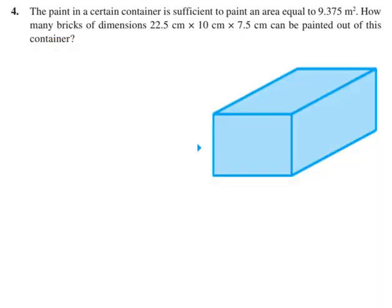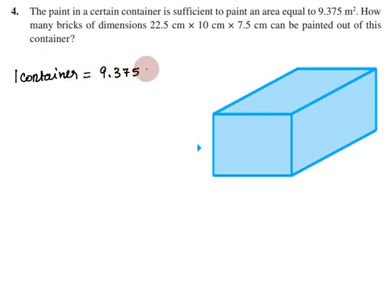Exercise 13.1, problem number 4. The paint in a certain container is sufficient to paint an area equal to 9.375 square meters. How many bricks of dimensions 22.5 cm × 10 cm × 7.5 cm can be painted out of this container? So in the container we will paint 9.375 square meters, and we need to find how many bricks can be painted.